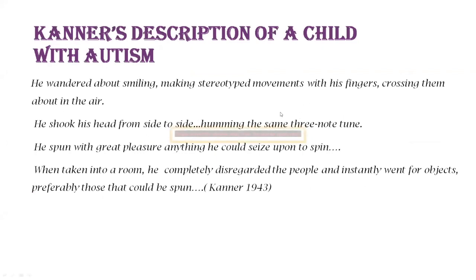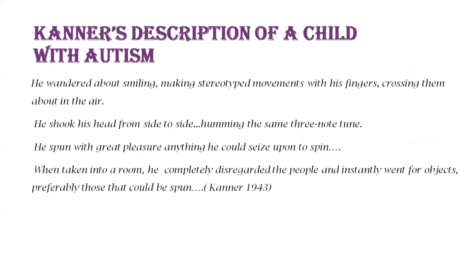Kanner's early clinical description of autism is very similar to what we see in modern classificatory systems. He says about a child that this child wandered about smiling, making stereotypical movements with his fingers. He shook his head from side to side, humming the same three-note tune. He spun with great pleasure anything he could seize upon to spin. When taken into a room, he completely disregarded the people and instantly went for objects, preferably those that could be spun. We can see clues about social communication deficits and restrictive repetitive behaviors — the tendency to shake his head, a very limited repertoire of interests, preference only for objects that could be spun.